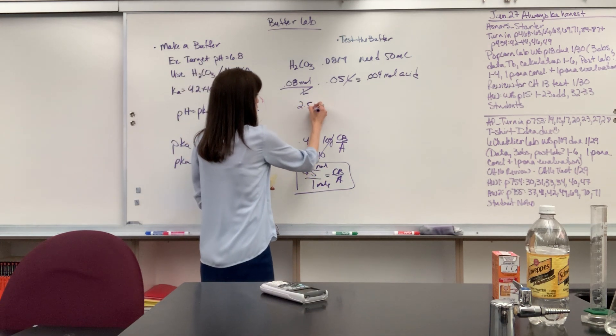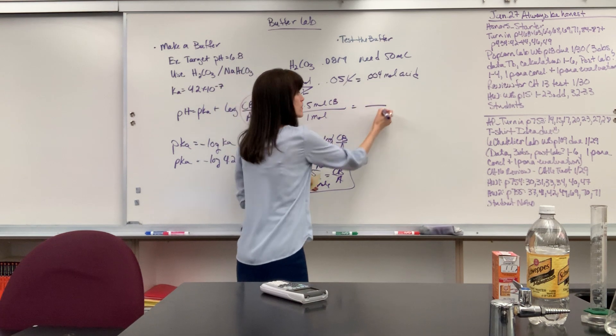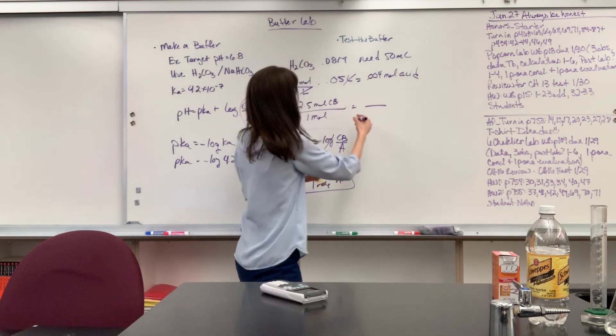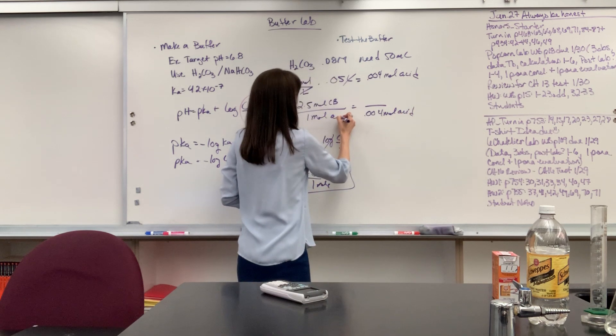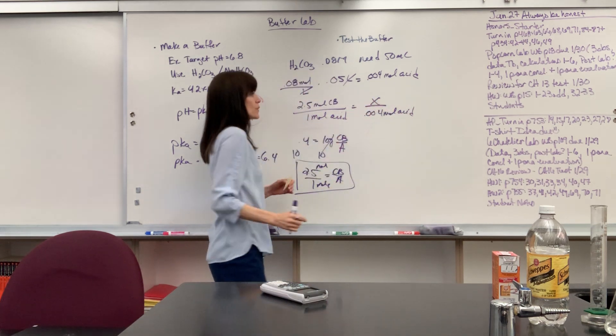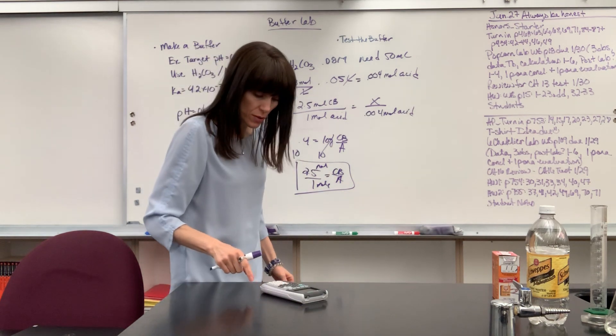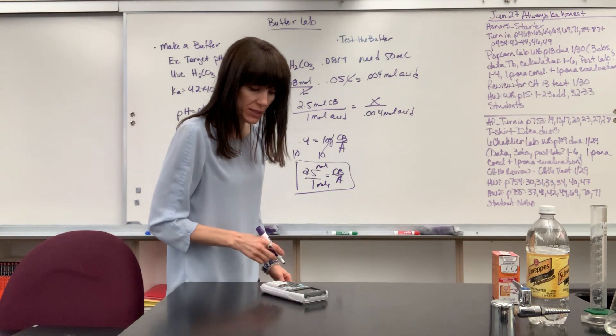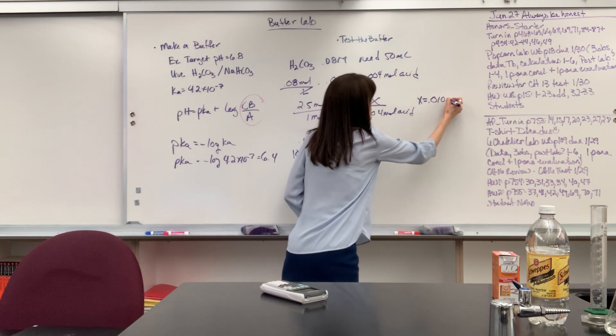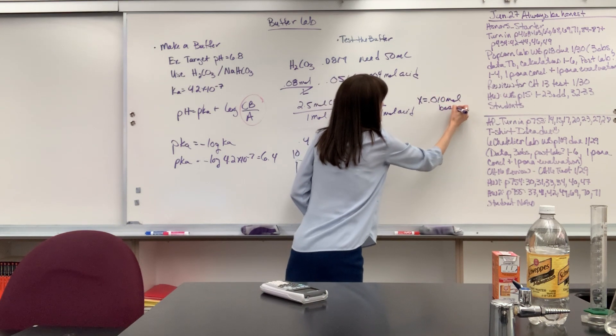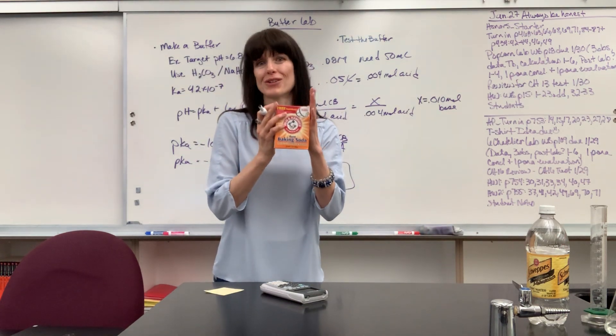Now I need to come up with this ratio. So if I have 2.5 moles of conjugate base for every one mole of acid, and then I say, okay, well, in that 50 mils, we've got 0.004 moles of the acid. Then how many moles do I need of base to maintain that 2.5 to 1 mole ratio? Let's do that. So 2.5 times 0.004, and we are going to get 0.010. So X is going to equal 0.010 moles of base. Okay, nice. We found the moles that we need of this sodium hydrogen carbonate.